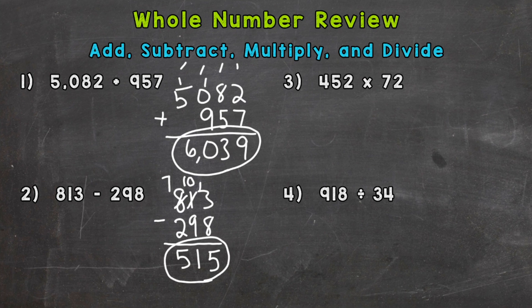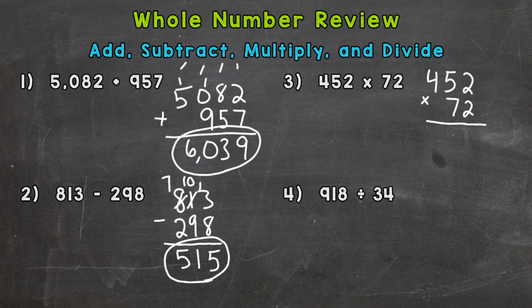On to multiplication. We have 452 times 72. Again, let's line our places up. For multiplication, we need to take our 2 to the 2, 5, and 4, and then the 7 to the 2, 5, and 4.